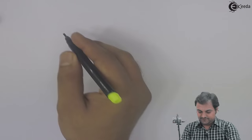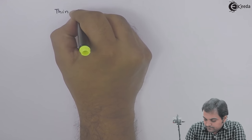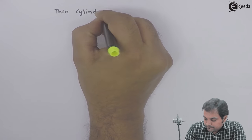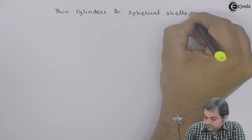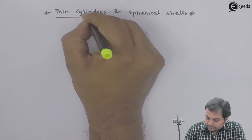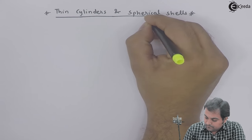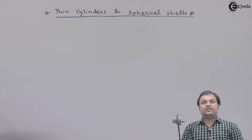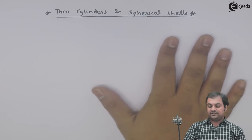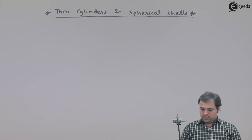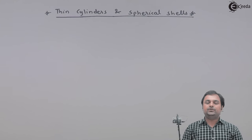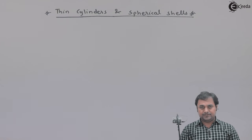Let us take a new chapter in SOM. The name of the chapter is Thin Cylinders and Spherical Shells. Thin cylinders are devices which are used in engineering applications. These are also called as pressure vessels.